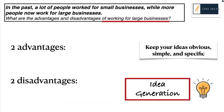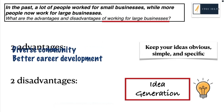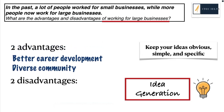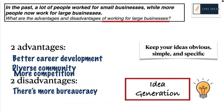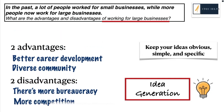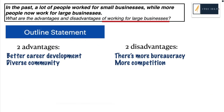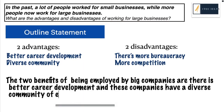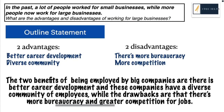The ideas I came up with: my first advantage is that there is better career development in large businesses, and also there's a diverse community — lots of different types of people who work in large businesses. The disadvantages are that there's usually more bureaucracy and red tape, and there's also more competition for different jobs. Now I've got my four ideas, and we need to clearly state them in an outline statement. The outline statement I've written is: 'The two benefits of being employed by big companies are better career development, and these companies have a diverse community of employees, while the drawbacks are that there's more bureaucracy and greater competition for jobs.'